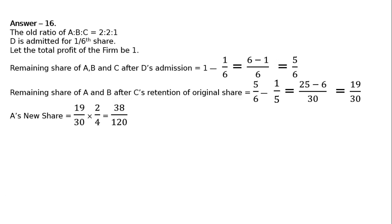This 19/30 will be distributed among A and B in equal ratio 2:2, or 1:1, so each gets 1/2. Hence A's new share is 19/30 multiplied by 2/4, which equals 38/120. Similarly, B's new share is also 38/120.